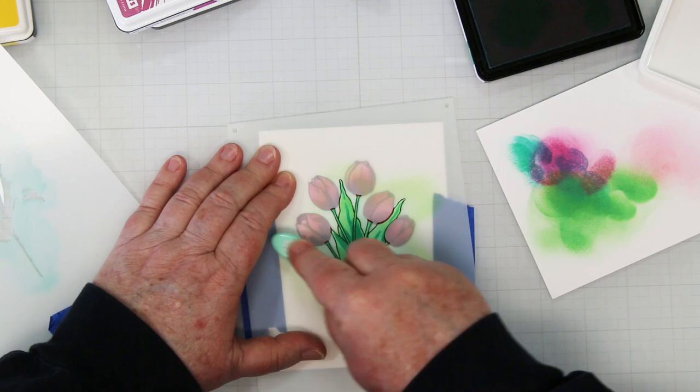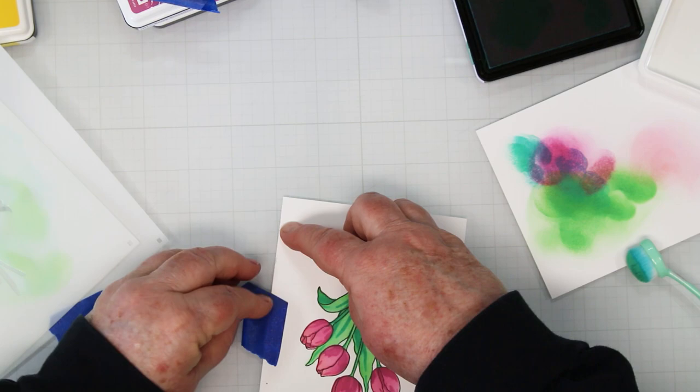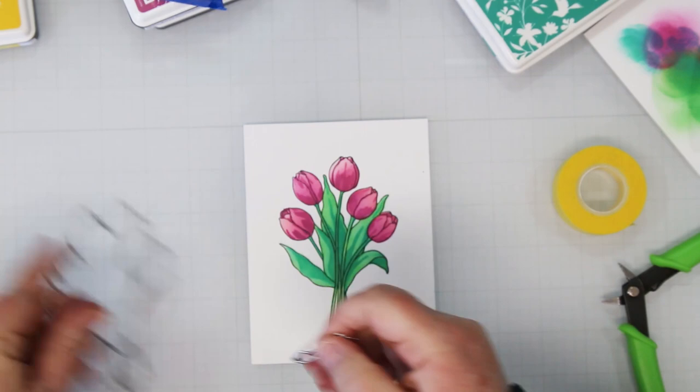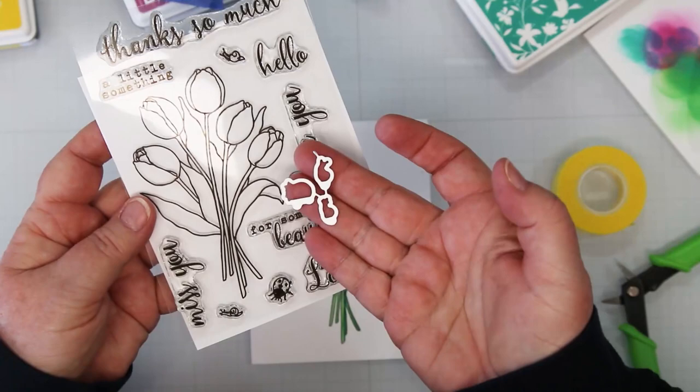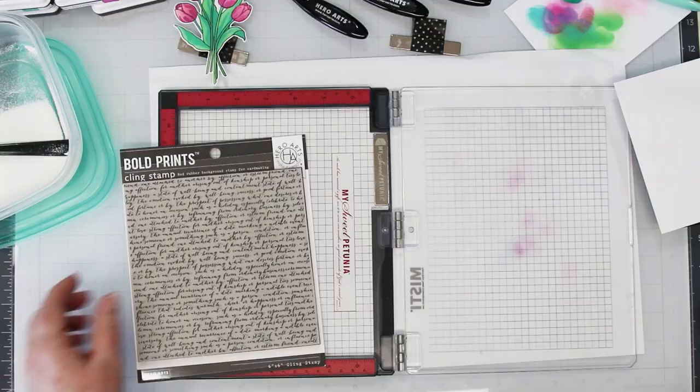We're finished with this and now we're going to take the coordinating die, the tulip bouquet frame cut. I'm going to tape it down on top of this and then run it through my die cutting machine. One tip here: take that little centerpiece out that is for all the little bugs in the stamp set, and you don't want it cutting out your tulips, so remove that before you start die cutting. There we go, it's all die cut and I'm just popping it out.